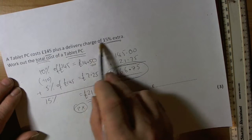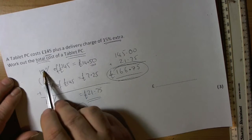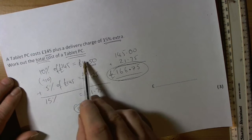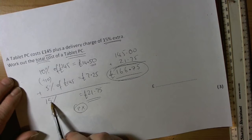Just remember: for 15%, do 10% by dividing by 10, which means moving the digits down one place. 5% will then be half of that value. Add them together to get the 15%.